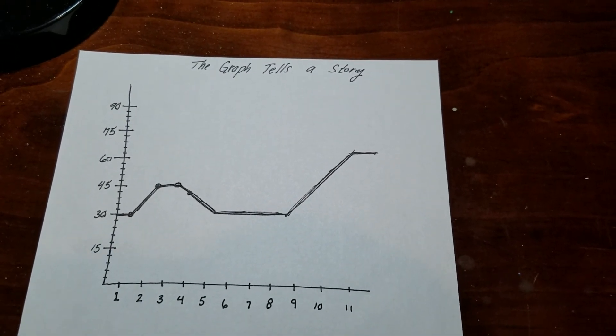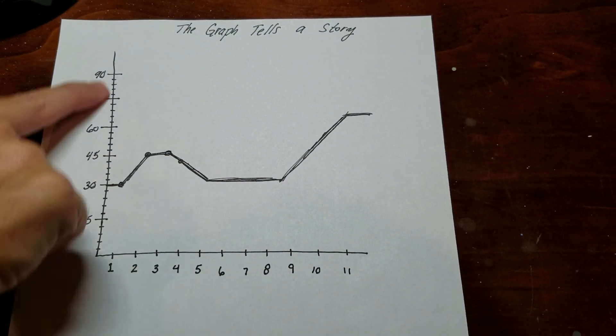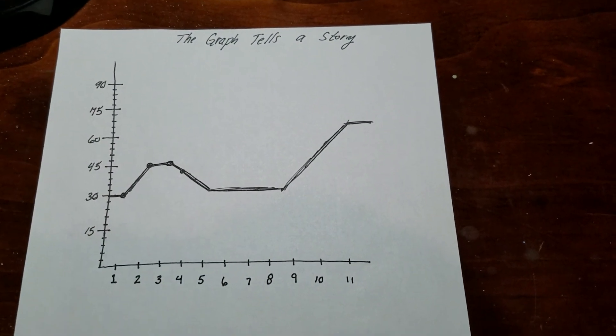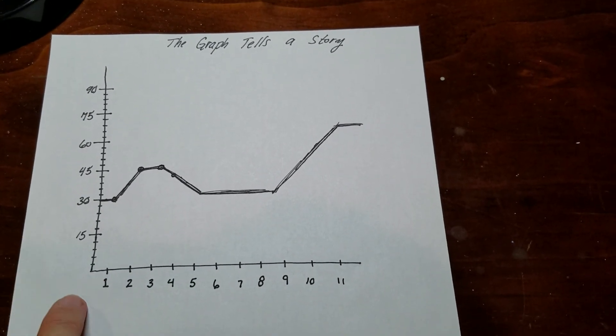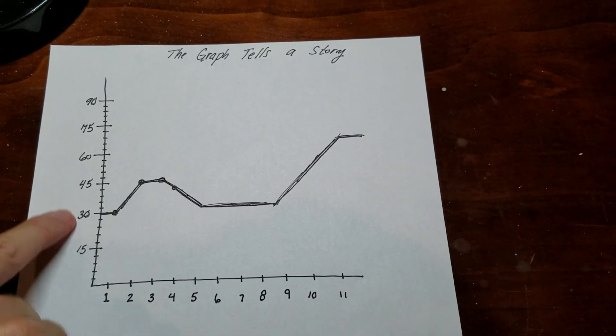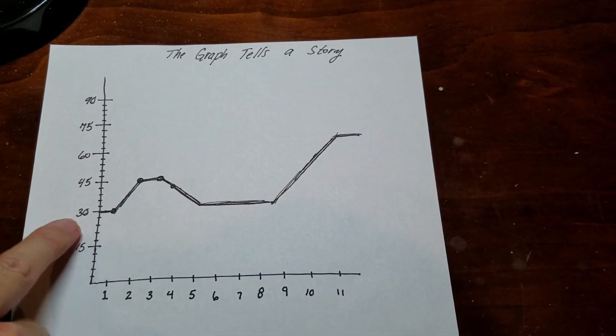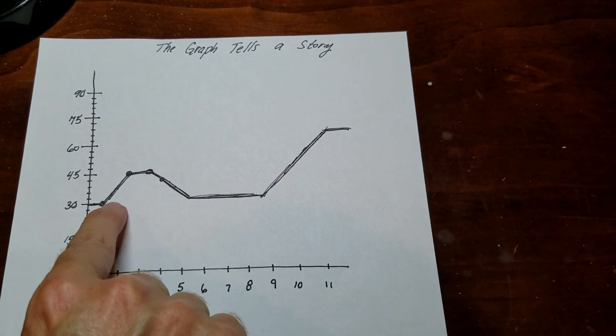So I know what I'm going to do. I'm going to say that this is the water level. So this is the water level, maybe in centimeters or something, for a fish pond. And then I could say that these are the number of days. So these are 11 days of the water level in a fish pond. And then what happens is the first day it looks like there's like 30 centimeters and then maybe it rains or something.